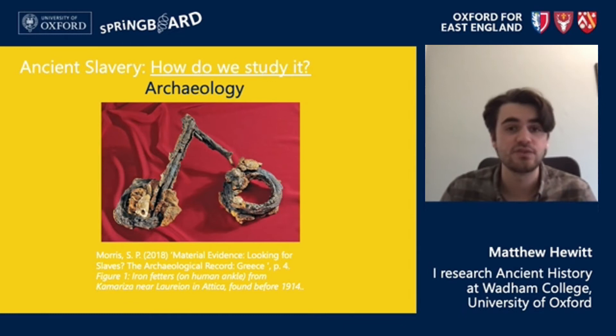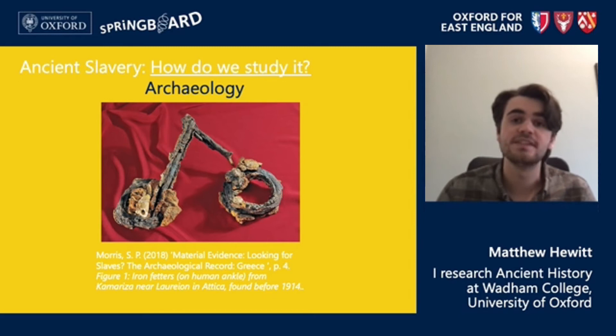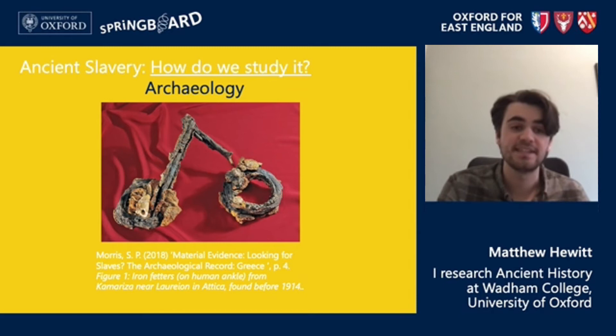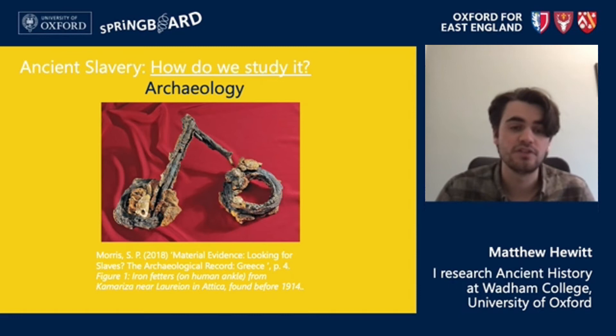One type of source that's extremely important to the ancient historian and can also be useful to the historian of ancient slavery is archaeology. The problem is it's often very difficult to identify objects or sites that can be associated with slavery. A rare and explicit example is the Laurion silver mines just outside classical Athens — you see in this photo a stark example of shackles that were found there, which bring to life the grim reality of ancient slavery.